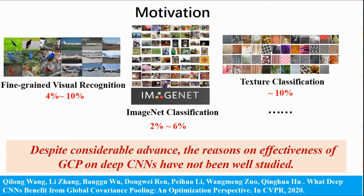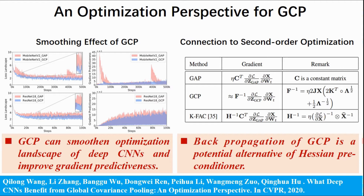We make an attempt to understand what DPCNs benefit from GCP from a viewpoint of optimization, and found that GCP has the ability to smoothen the optimization landscape of DPCNs and improve gradient predictiveness. Moreover, back-propagation of GCP is the potential alternative of the Hessian preconditioner. This finding can account for several merits delivered by GCP for training DPCNs.